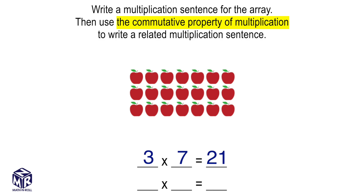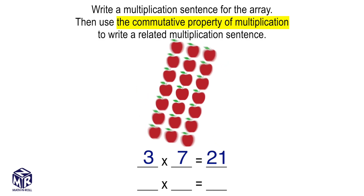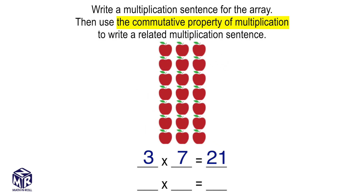To write the related multiplication sentence, let's flip the array vertically. Now we have 7 rows and 3 columns, so our multiplication sentence is 7 times 3 equals 21.